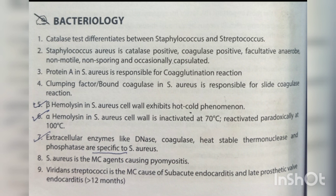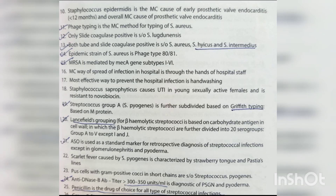Clumping factor or bound coagulase in Staph aureus is responsible for slide coagulase reaction. Beta hemolysin in Staph aureus cell wall exhibits the hot-cold phenomenon. Alpha hemolysin in Staph aureus is inactivated at 70°C and reactivated paradoxically at 100°C. Extracellular enzymes like DNase, coagulase, heat-stable thermonuclease, and phosphatase are specific to Staph aureus, which is the most common agent causing pyomyositis.